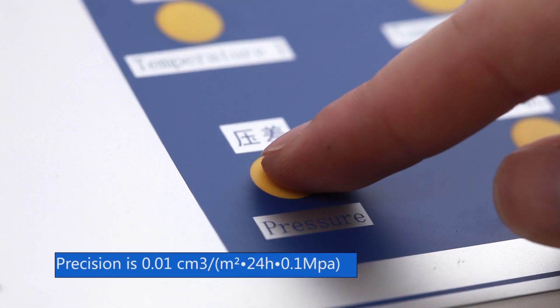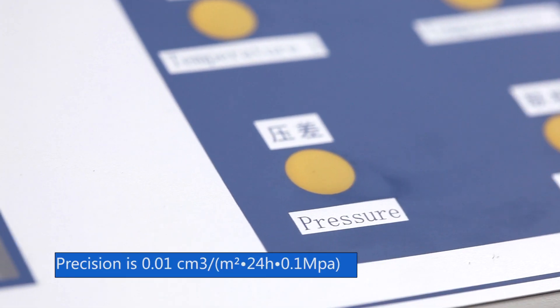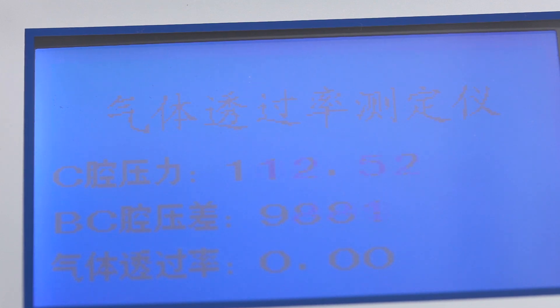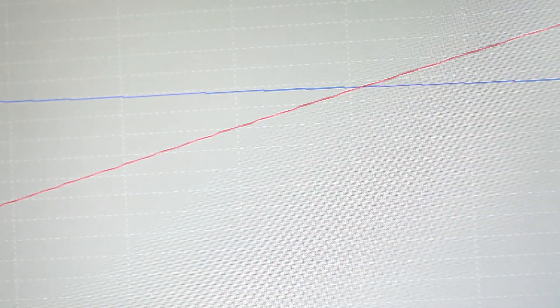Precision is positive or negative 0.01 Celsius degree. Real-time display data and curves of transmission rate, pressure, pressure difference, and temperature. It's easy for users to track the running status.